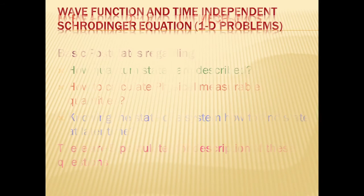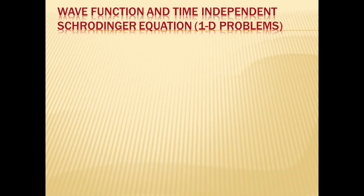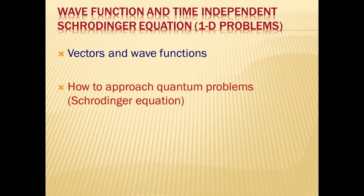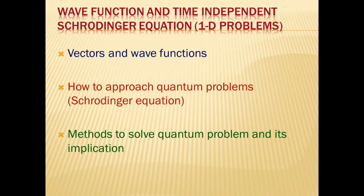The next unit covers Wave Function and the Time-Independent Schrödinger Equation, including one-dimensional problems. We will discuss the relation between vectors and wave functions — after studying the formalism unit, you will understand that in quantum mechanics everything is vectors. We will then study boundary value problems, how to apply boundary conditions, methods to solve quantum mechanical problems, and how the results differ from their classical counterparts.